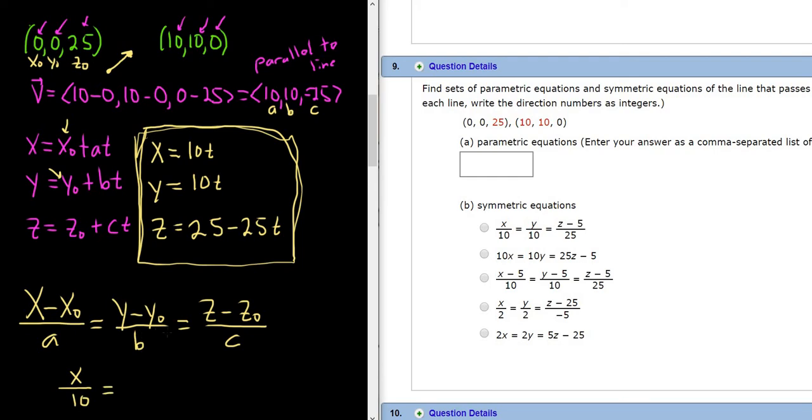And then we get y minus 0. So it will be just y. And then b is also 10. And the last one is z minus z naught, which is 25. And c was negative 25.